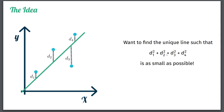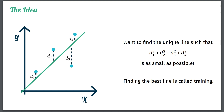It makes the sum as small as possible. The process of finding this line is called training the model. So we are given some data, we try to minimize the sum of the squared distances, and when we find the line that minimizes all the squared distances, we have our model. Next we are going to make all of these steps a bit more formal.